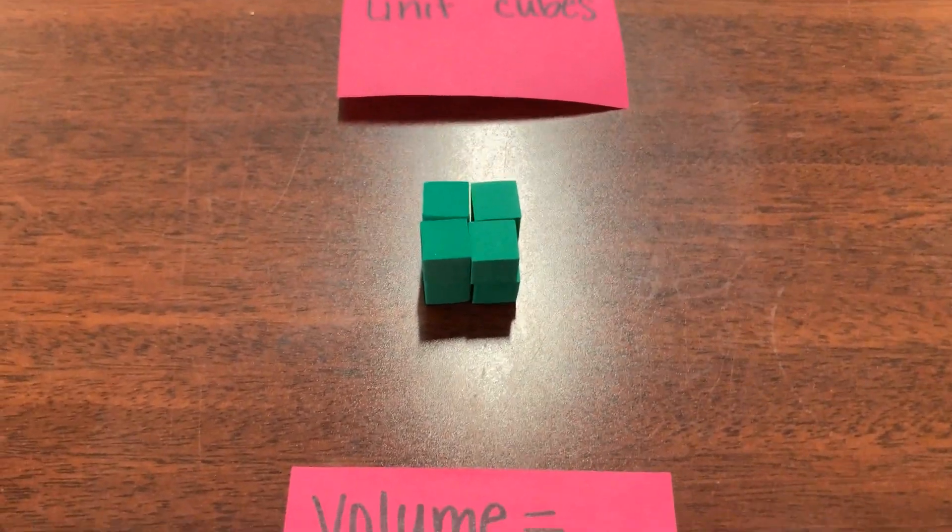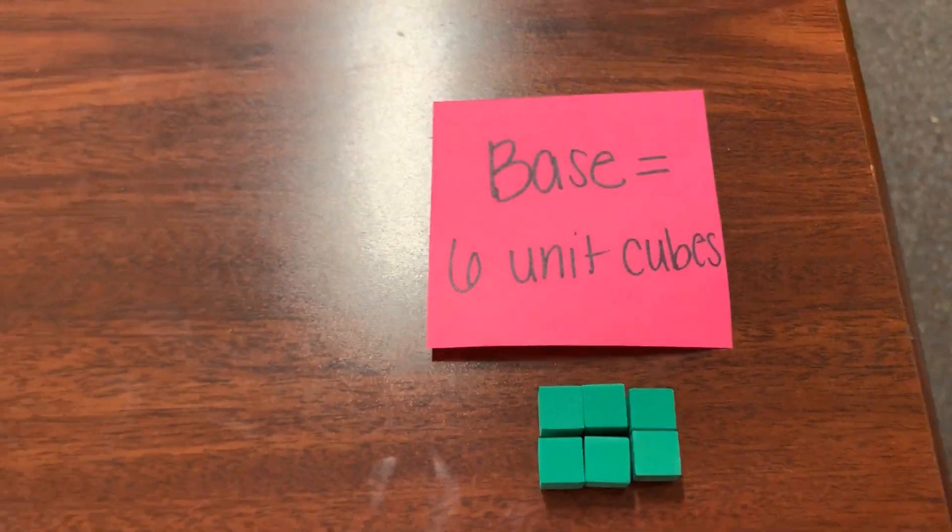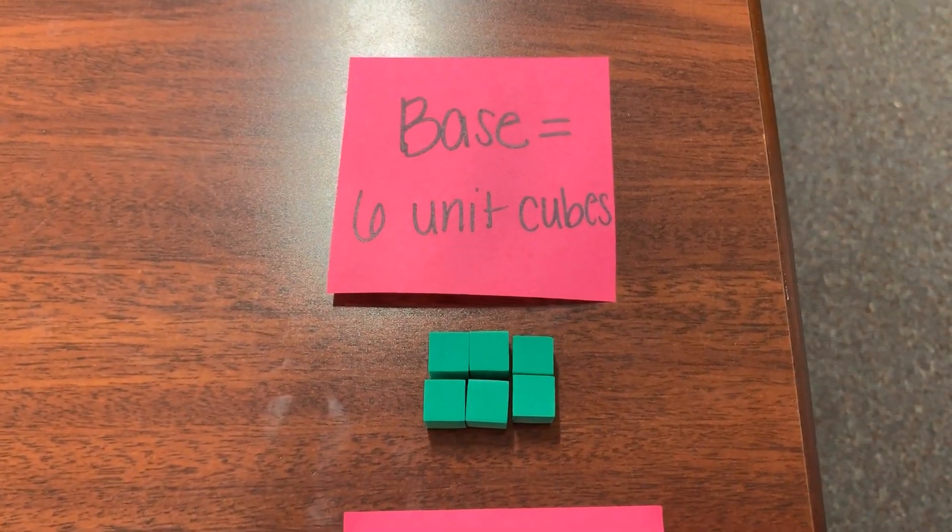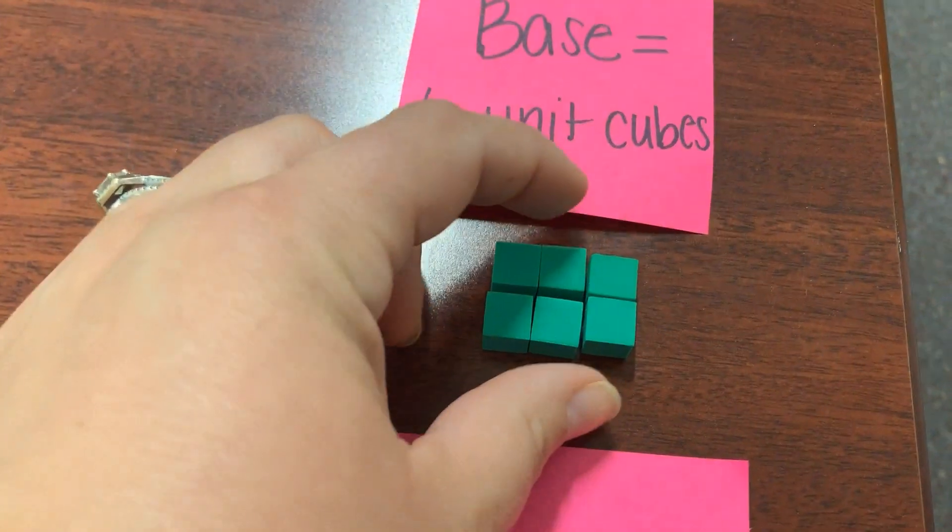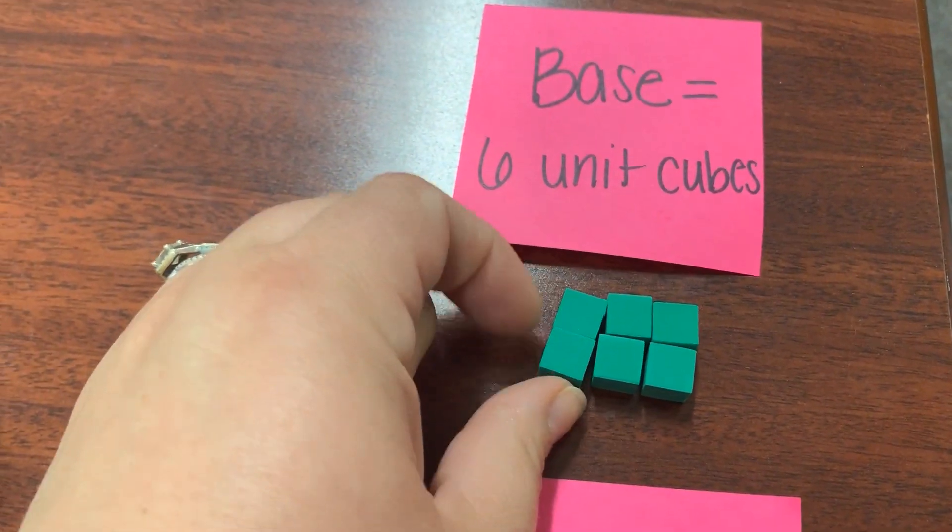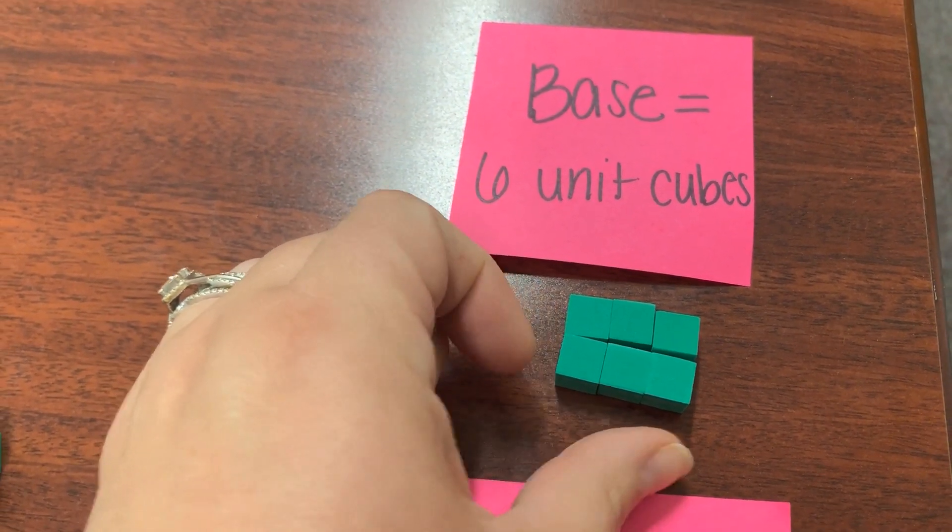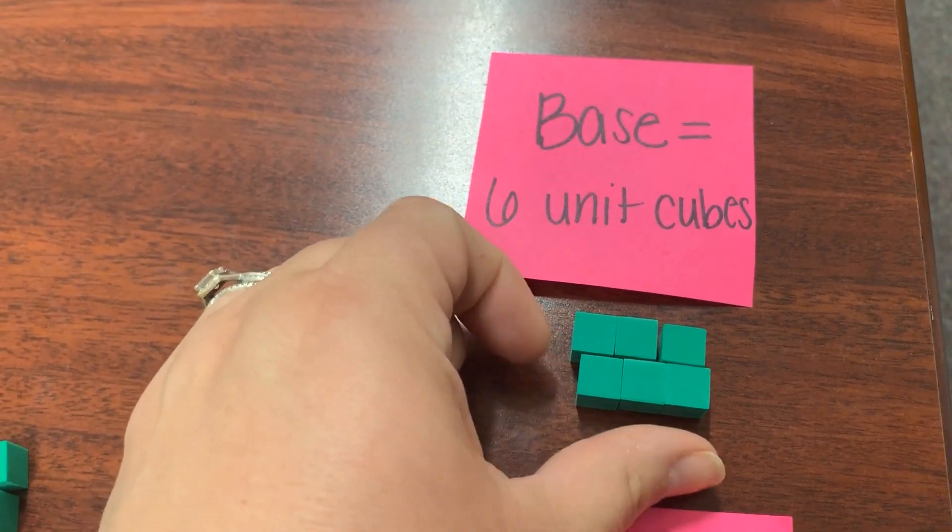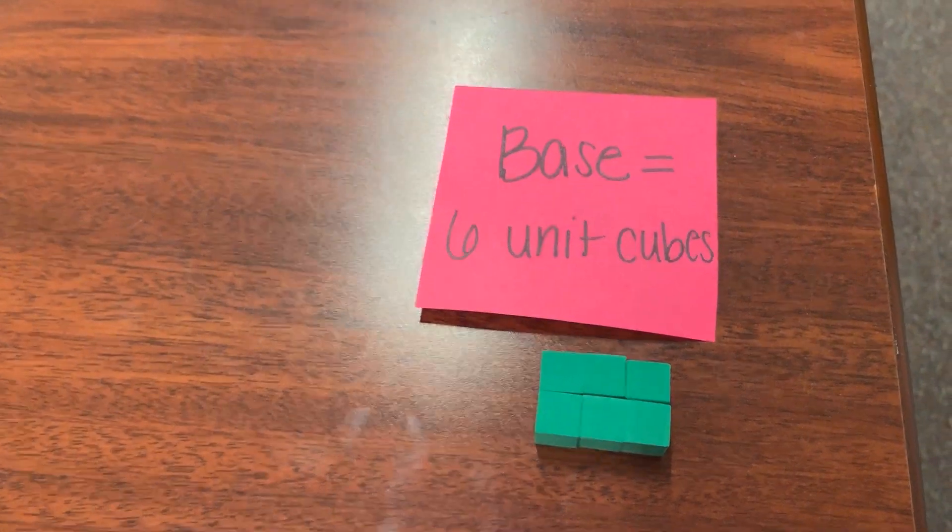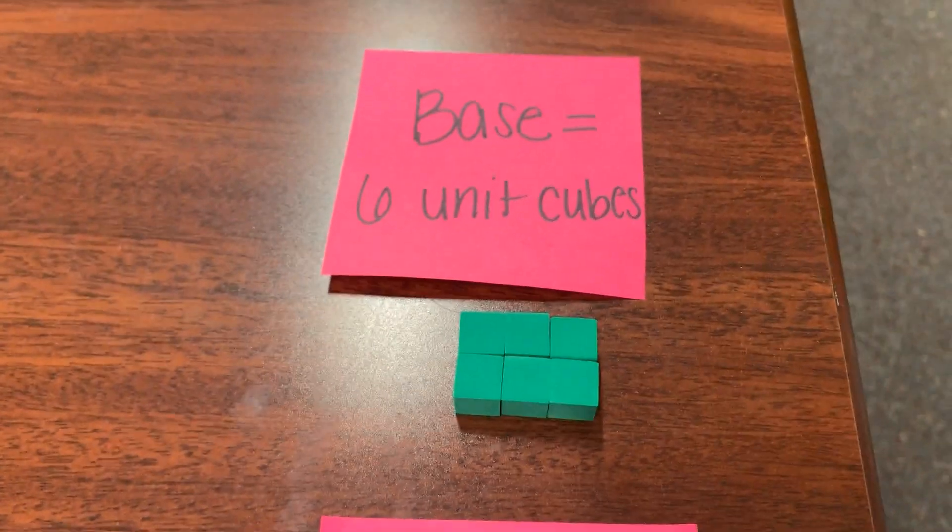So let's think a little more specifically to our learning target. Those were reviews. So we're going to look at this one. Our base, all you have is the base right now. This is the base, meaning I'm going to have more built onto this. It's going to be taller than it is right now. This is only the bottom layer. My base here is six unit cubes.